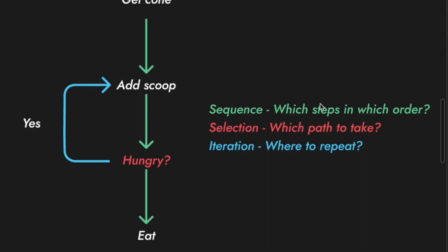And in code, these three things, sequence, selection, and iteration, are known as the basic programming constructs. So when you get into writing code, you should think about those three things before you start hitting the keyboard.